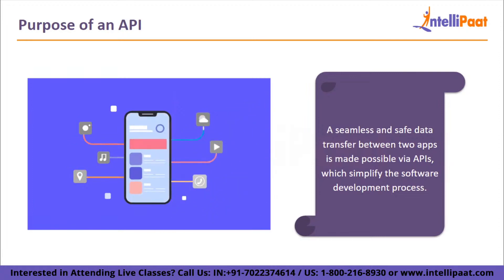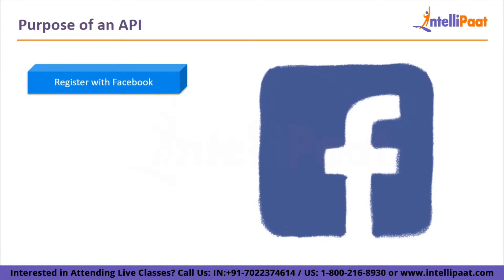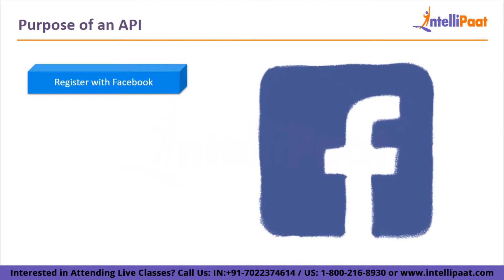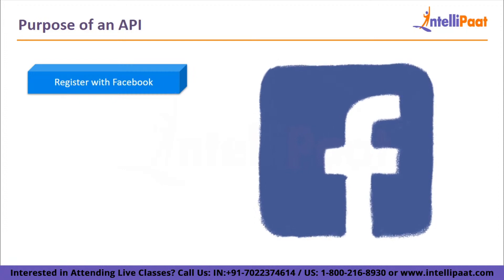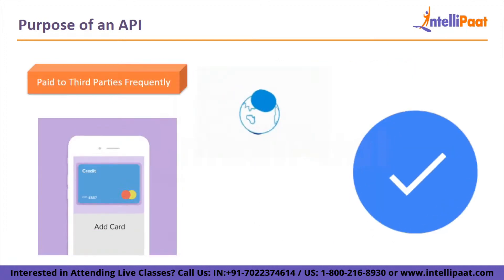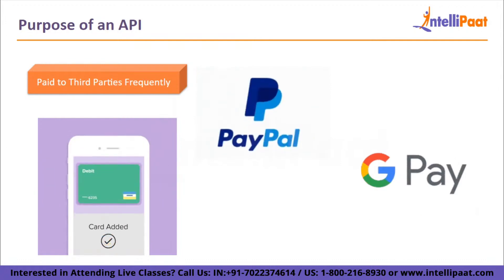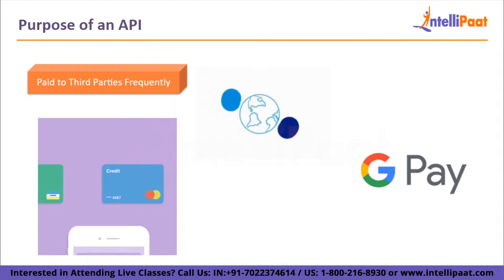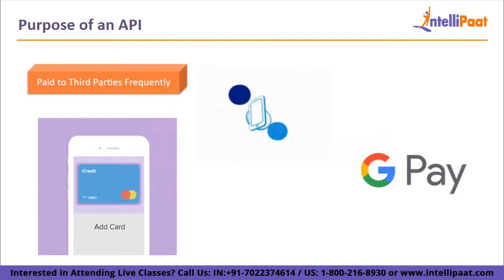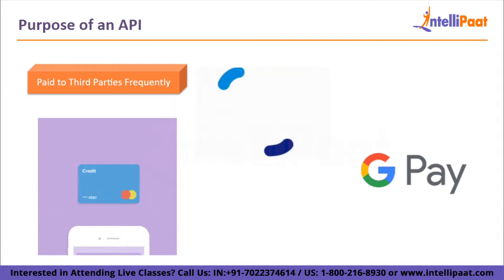Let's examine a few API examples. The first one is registering with Facebook — you can frequently choose to log in with your Facebook account on websites, which indicates that the website makes use of the Facebook login API to integrate its product and allow consumers to avoid the registration process. Next, payment to third parties: you can see PayPal, Apple Pay or Google Pay payment options, indicating that these services are integrated into the payment system through an API.